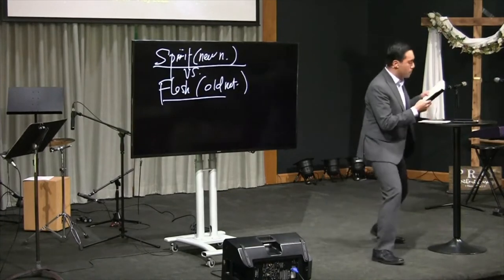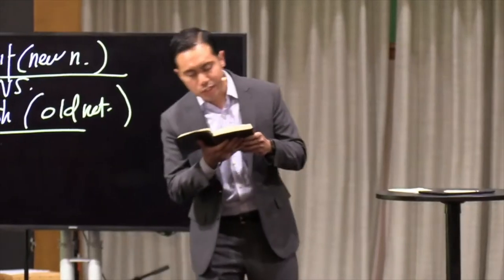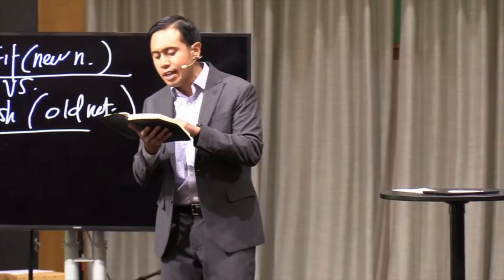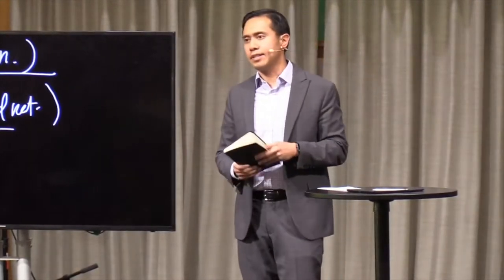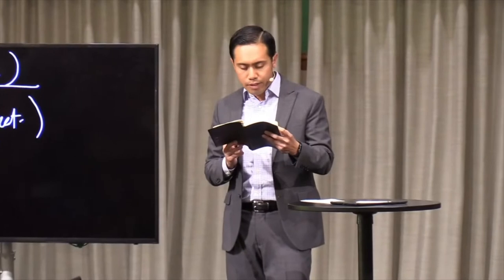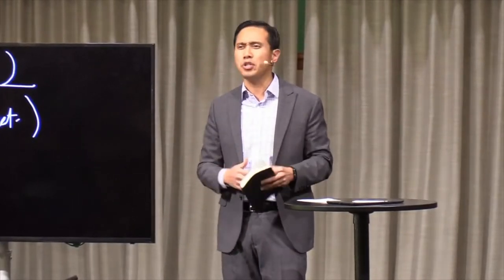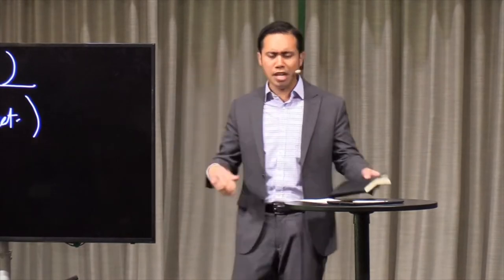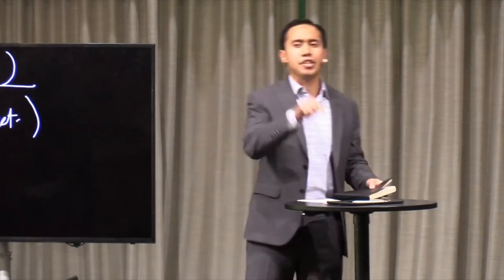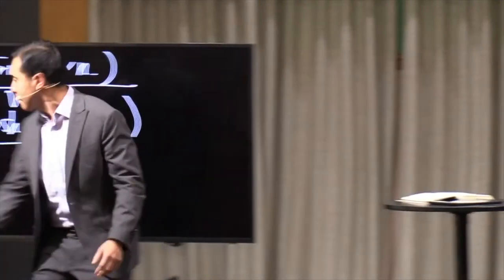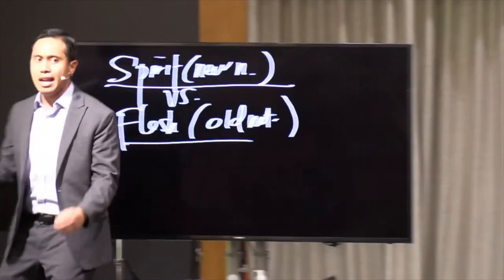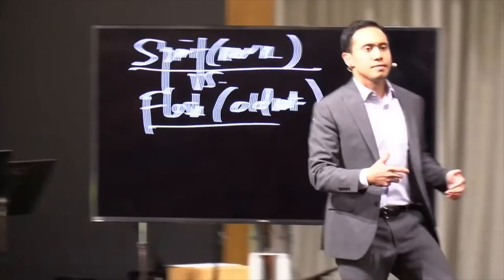Look at verse 17. The text says, For the flesh lusts against the spirit and the spirit against the flesh, and these are contrary to one another, so that you do not do the things that you wish. All right, Nestor. What does this mean? I actually don't like the word that they use here, for the flesh lusts against the spirit. When you use the word lust, it conjures up certain images in your mind. I like how the New International Version actually translates this verse. The New International Version says, For the flesh desires what is contrary to the spirit.